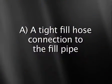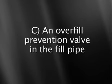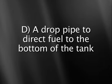The basic components of the fill system are: A, a tight fill hose connection to the fill pipe; B, a spill container surrounding the hose connection point; C, an overfill prevention valve in the fill pipe that automatically closes on high level; and D, a drop pipe to direct fuel to the bottom of the tank and minimize turbulence.